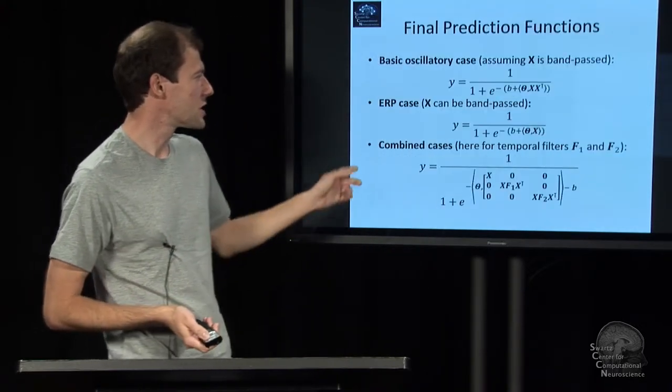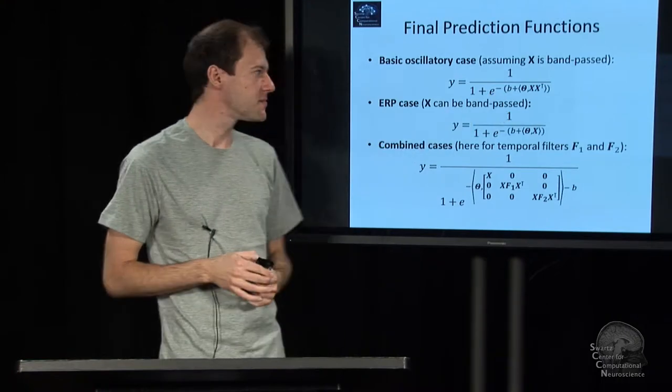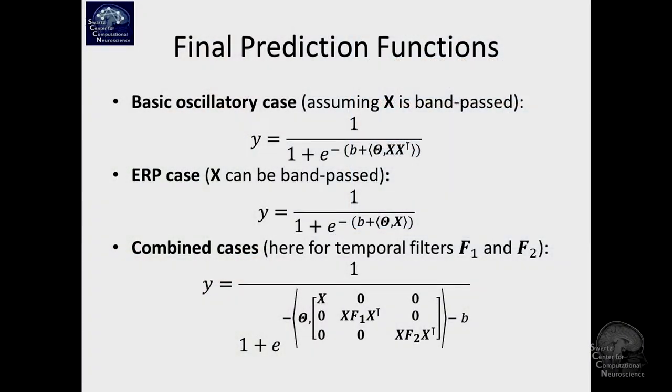So just to show you some of these final prediction functions. If you're calculating the probability that your label is 1 instead of minus 1, you're going to say, it's the logistic term here, and here's the spelled out linear map.